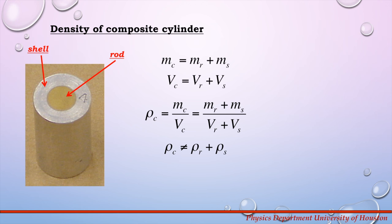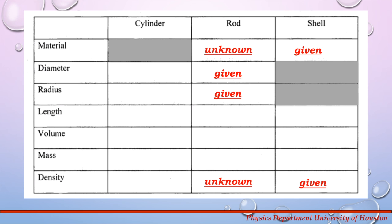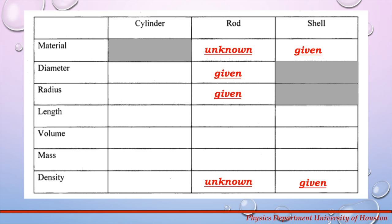Now you're ready to proceed with your calculations in your laboratory manual. I would like to point out the order in which you will fill out the table to calculate the density of the composite object. You will be given the material from which the outside shell is made — this can be found on the information sheet at your station. Each composite cylinder has a different number marking; find your marking and identify the shell material, then record its density. From the information sheet, you will also find that the radius of the inner rod is 3/16th of an inch, which you will need to convert to centimeters. The diameter of the inner rod is simply the radius multiplied by two.